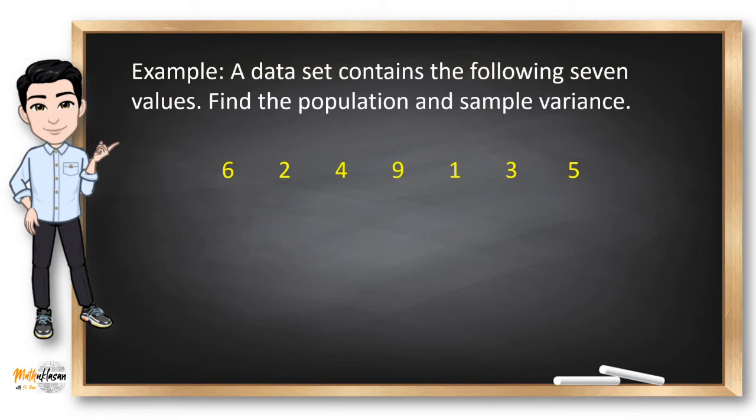For example, a dataset contains the following seven values. Find the population and sample variance. What we need to do is to compute for the mean. By using the formula for the mean, adding this data, we'll have 30. And since we have 7 in the dataset, we will divide it by 7. So 30 divided by 7 is 4.29. The mean for the population is 4.29. We will also use the same formula in the sample mean, so the answer is also 4.29.